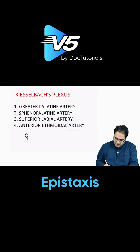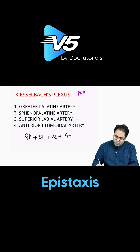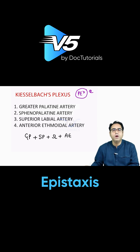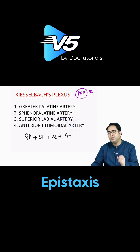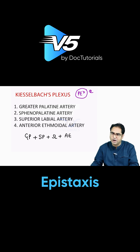The four arteries contributing to the Kiesselbach plexus are: number one, greater palatine; number two, sphenopalatine; number three, superior labial; and number four, anterior ethmoidal artery. An important and famous exam question: the posterior ethmoidal artery has no role in contributing to the Kiesselbach plexus. So which artery has no contribution? Answer: posterior ethmoidal artery.